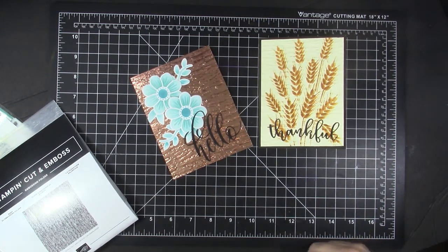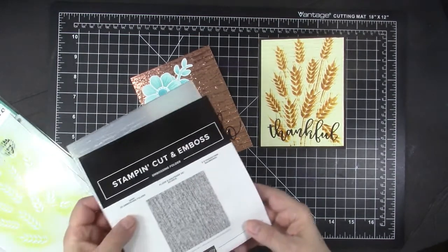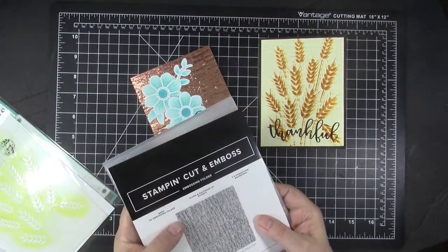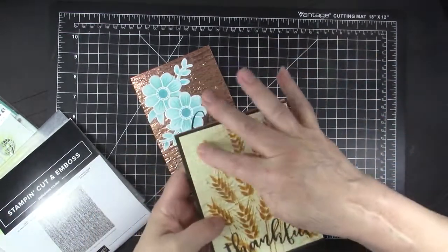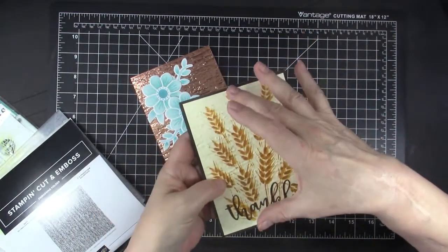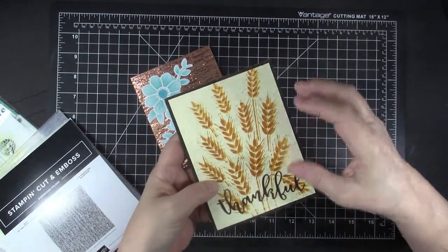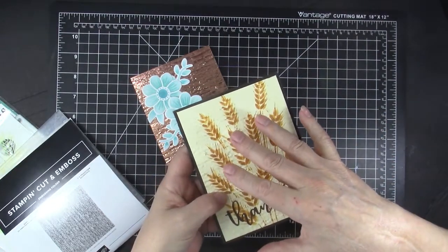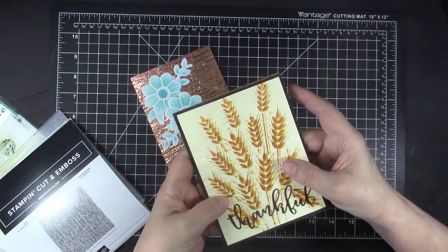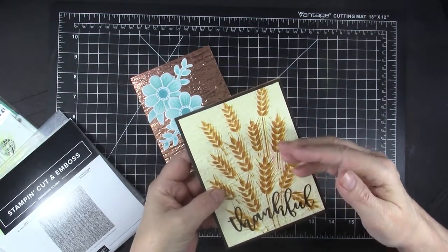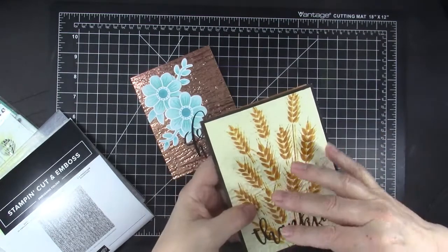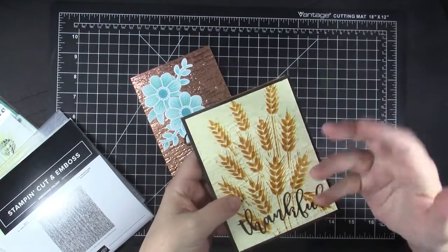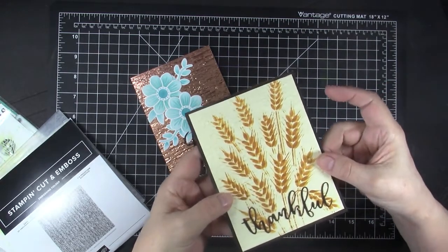I made my first two cards with this new Bark embossing folder from Stampin' Up. As you can see, I embossed the cream background on this card and then I stenciled over it with a stencil called Barley from Cut Plourations. The texture from the embossing folders makes for a really lovely, somewhat masculine, clean and simple card.